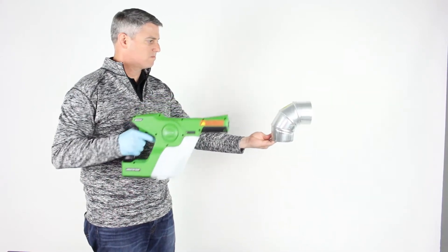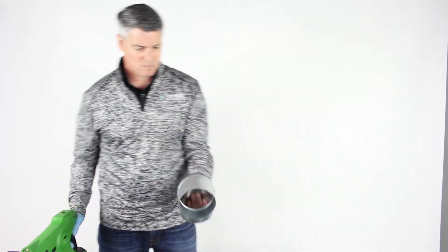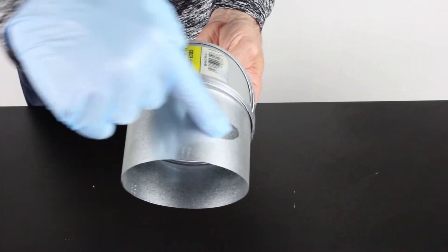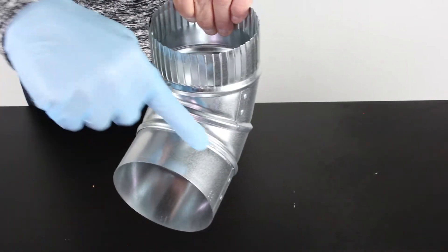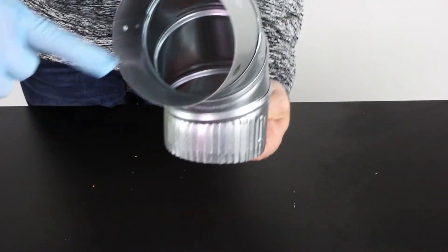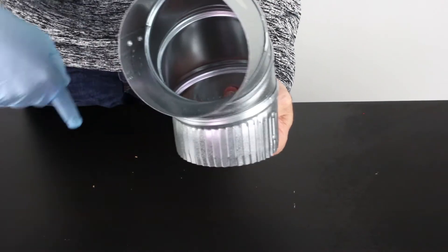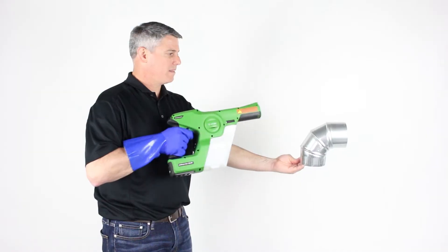When I spray with this, you'll see that we still get a full electrostatic charge on the particles, which you can see by the full wrapping effect and the turnaround effect that's getting the inside of the vent pipe.